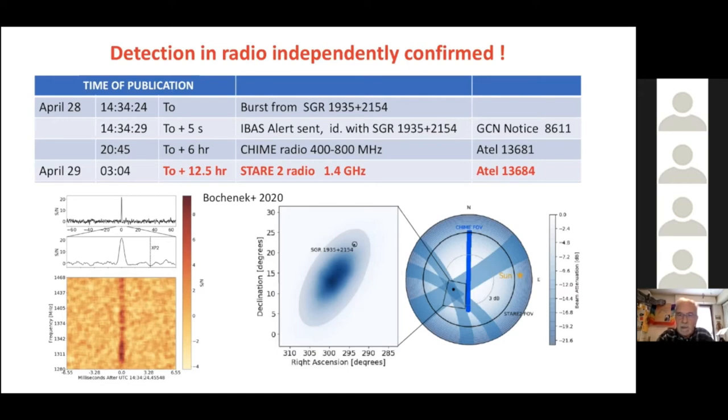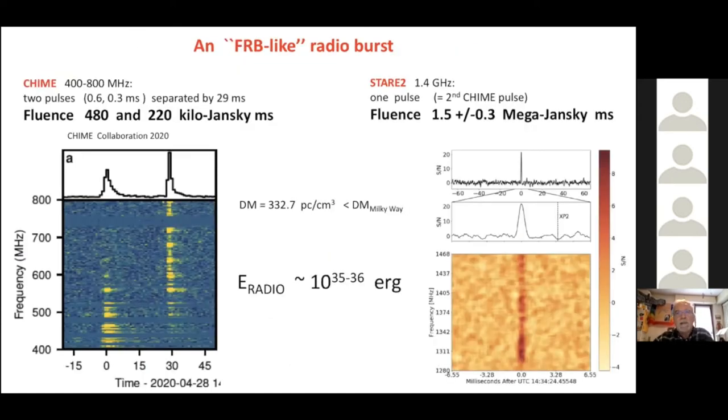So there is no doubt at all that all these events are related and coming from the same source that is a magnetar in our galaxy. As you see from these reports, as you see from these plots reporting the radio discoveries that were done at different frequencies, because the STARE2 was at higher frequency, it was at 1.4 gigahertz. The pulses are very similar to fast radio bursts. Even in this case, they came from a source in our galaxy.